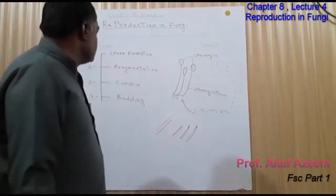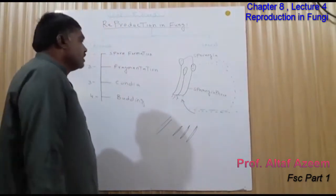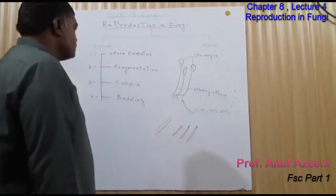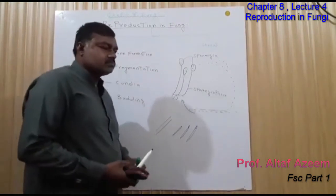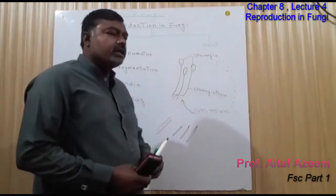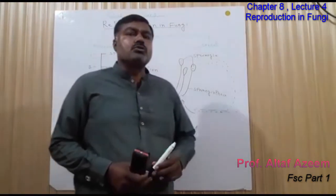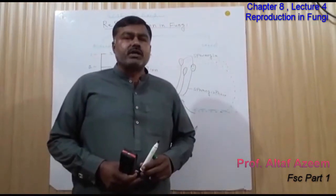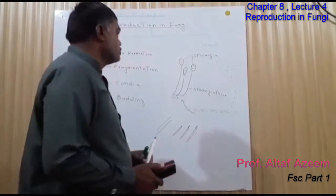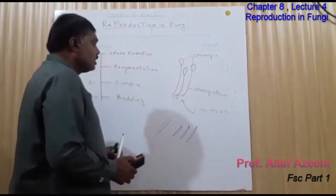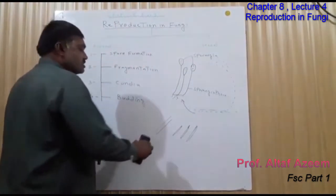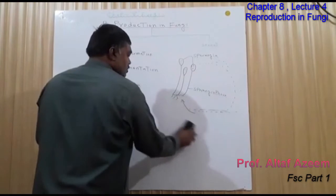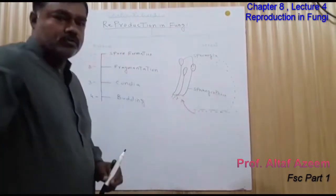The third method is conidia formation. Conidia are also thick-walled, non-motile structures that are produced on some branches known as conidiophores.